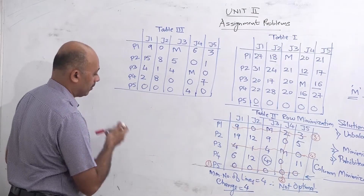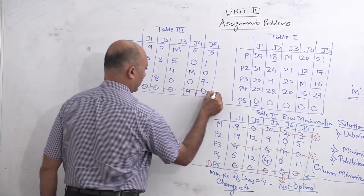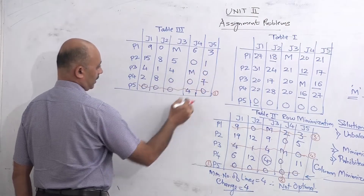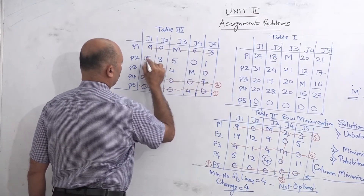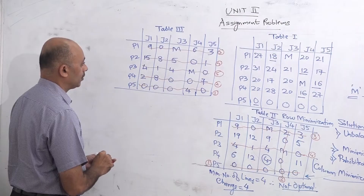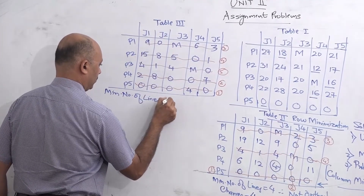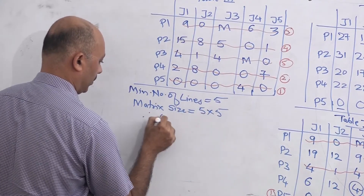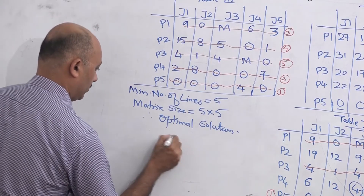Now with the new table, we again check how many lines we get. Starting with the highest zeros: one row has 4 zeros — line 1. Then three more lines cover the remaining zeros — lines 2, 3, 4, and 5. We now get 5 lines, and the matrix size is also 5, so the minimum number of lines is 5. Therefore the solution is optimal.